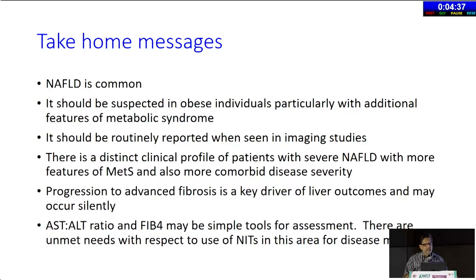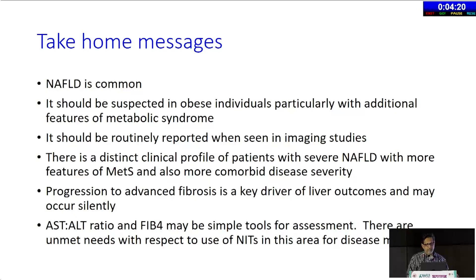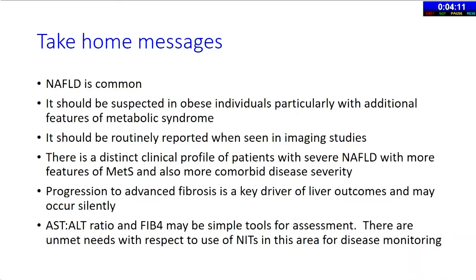Some take-home messages: Fatty liver disease is common and should be suspected in anyone with excess adiposity or features of metabolic syndrome. It should be routinely reported in imaging studies. Progression to advanced fibrosis is the key driver of liver outcomes and can occur silently — you cannot rely on liver enzymes. The AST-to-ALT ratio and FIB4 are simple tools for assessment. If there is one message to take home: check the FIB4. If it is less than 1.3, very little is going to happen to the patient in the next five years. If it is more than 2.6, you better pay close attention to that patient.